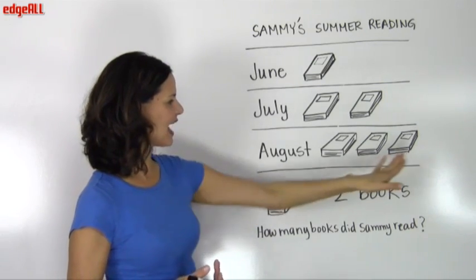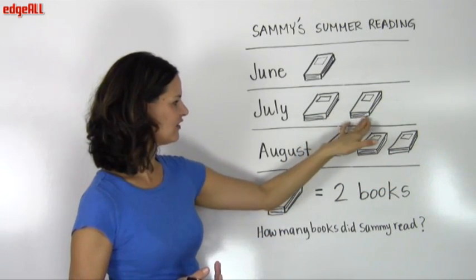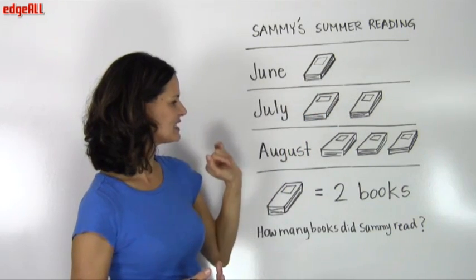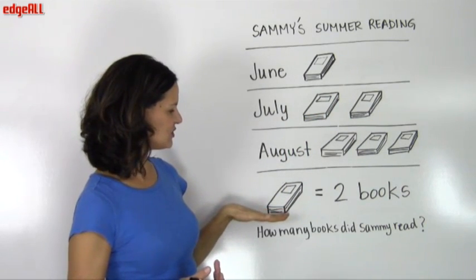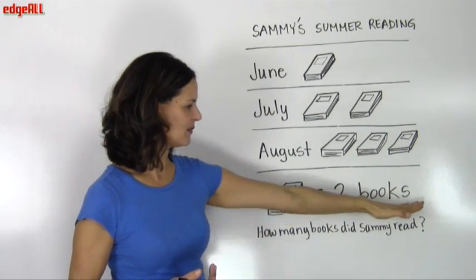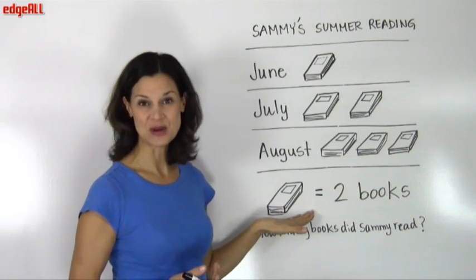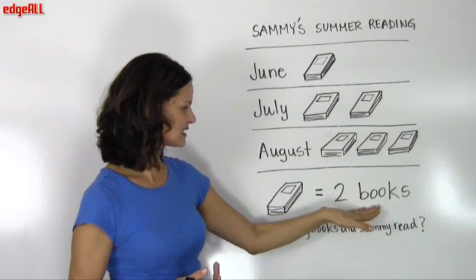So, in total, we have one, two, three, four, five, six book symbols. And using the key here at the bottom, we know that each book symbol equals two books.